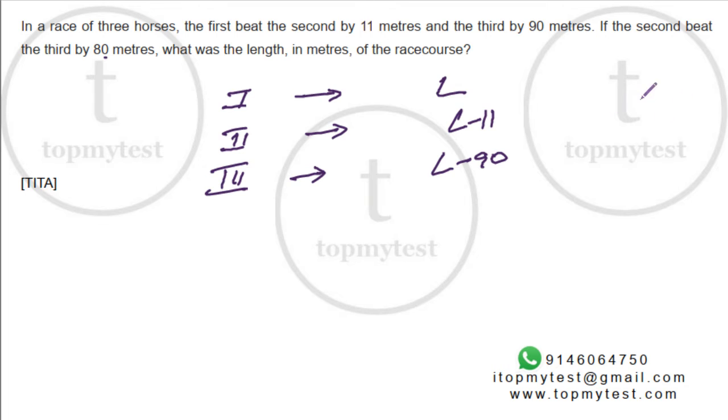When the second finishes the race, the third one is behind by 80 meters. Now from this instance to this instance, the second horse has run 11 meters. How much has the third horse run? Can we figure that out?